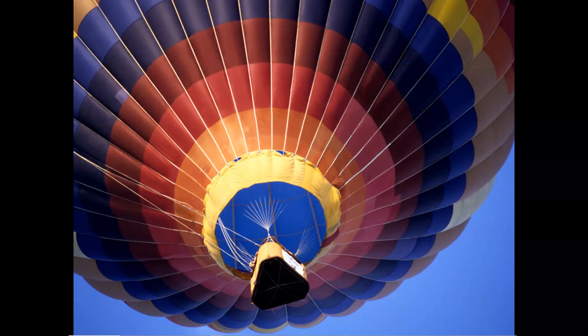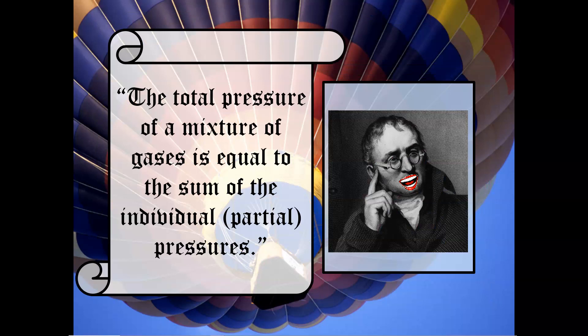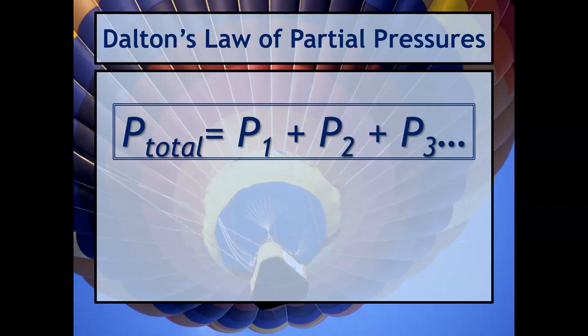Taking this into account, we can now develop partial pressures. This is John Dalton, and he basically said that the total pressure of a mixture of gases is equal to the sum of the individual or partial pressures. So the total pressure equals the partial pressure of gas one, plus gas two, plus gas three — just like you saw for the composition of air.